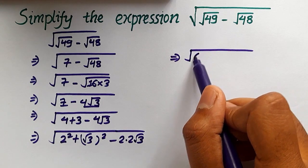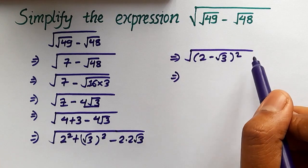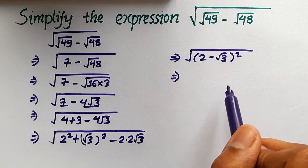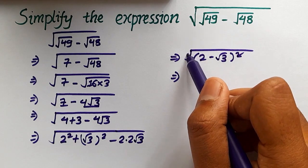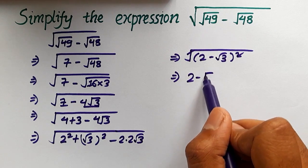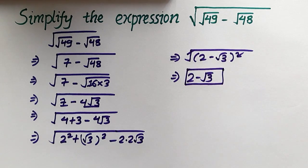So we can write this as √((2 - √3)²). We can cancel out the square and the root, making our final answer 2 - √3. And that's the solution we require.